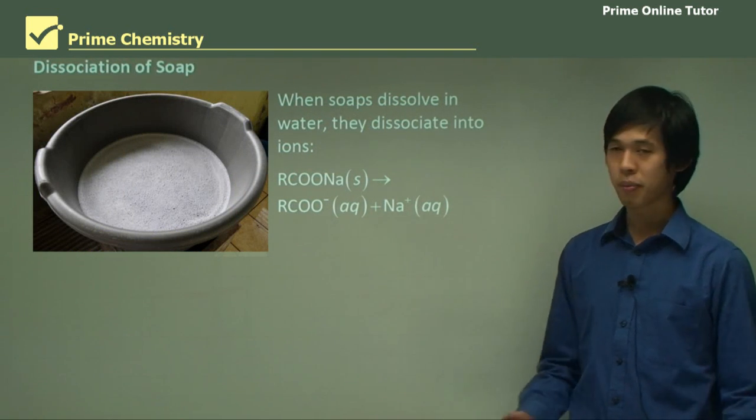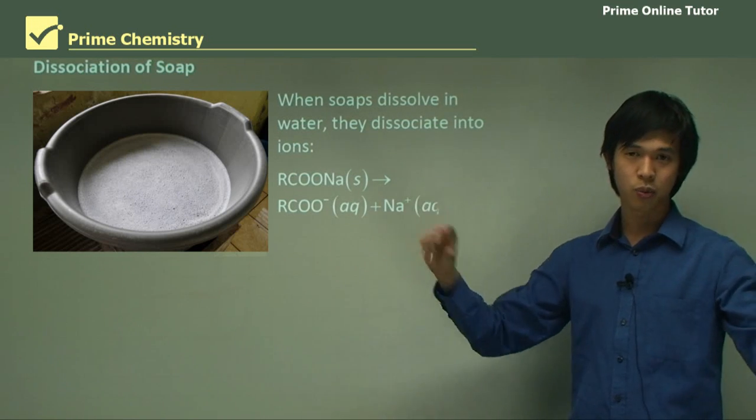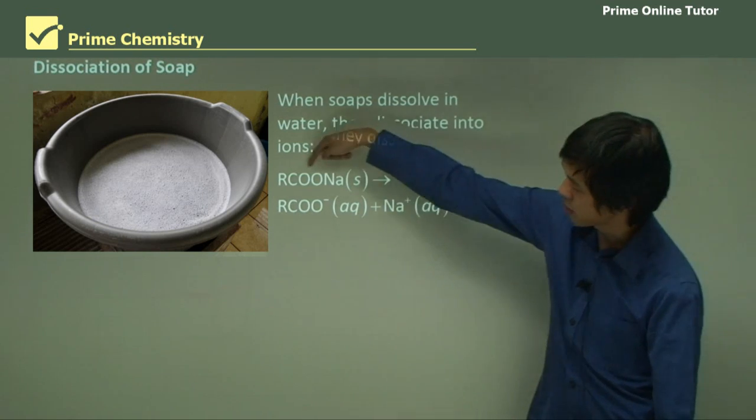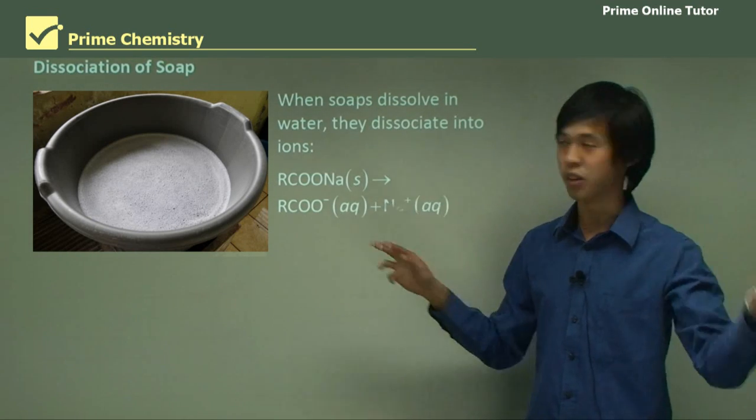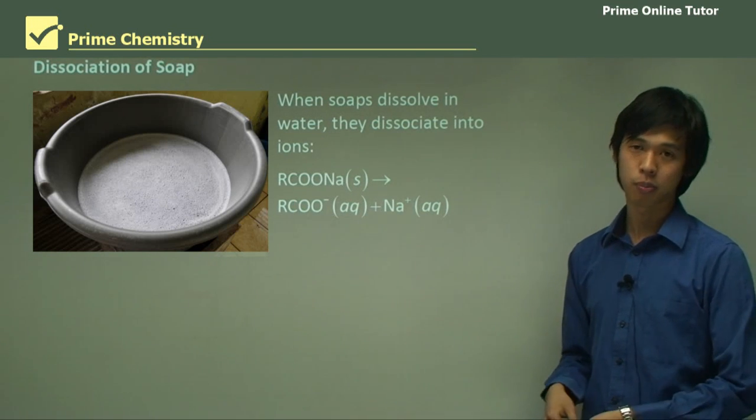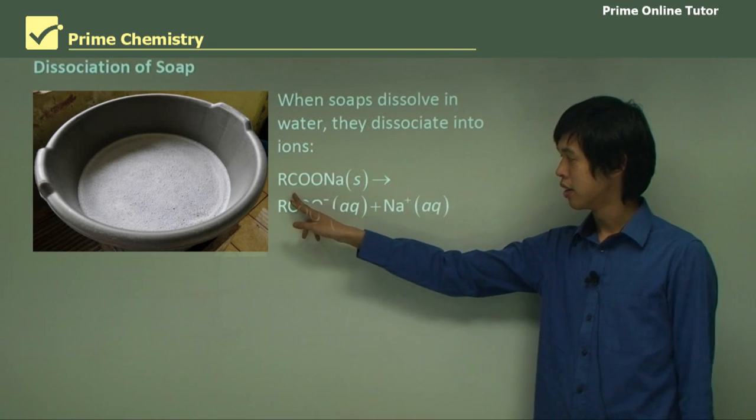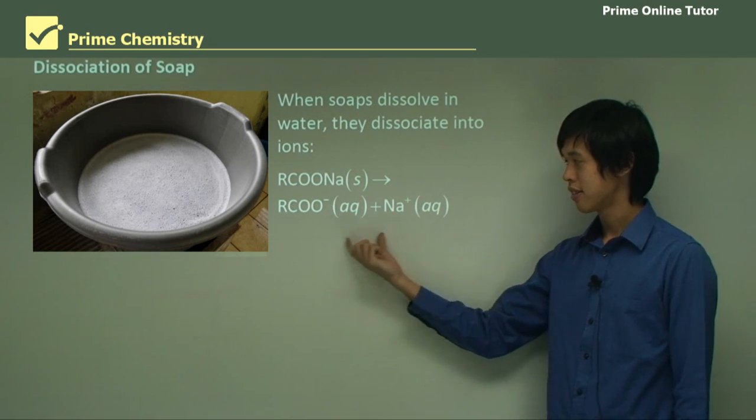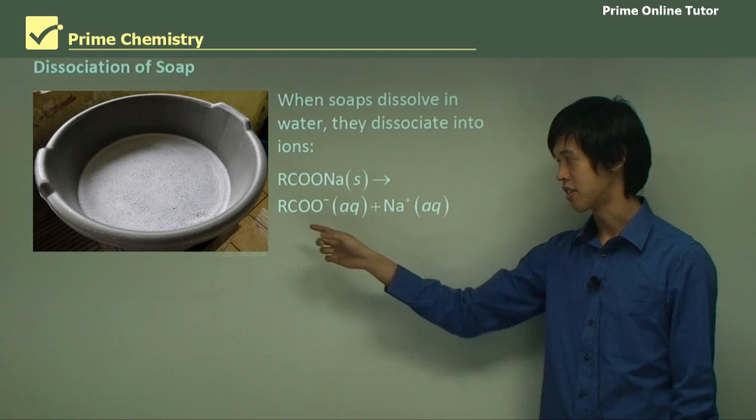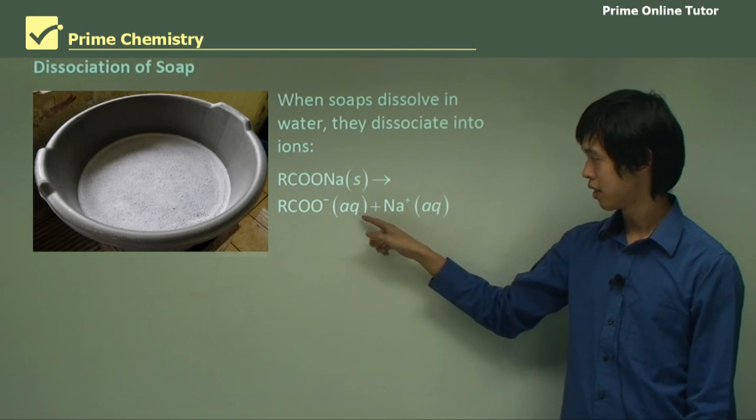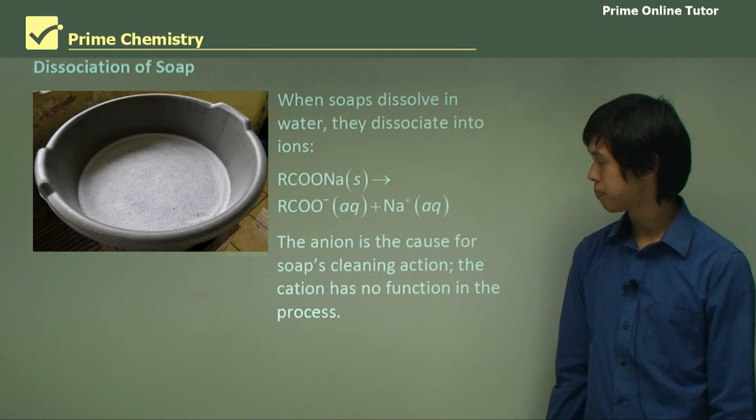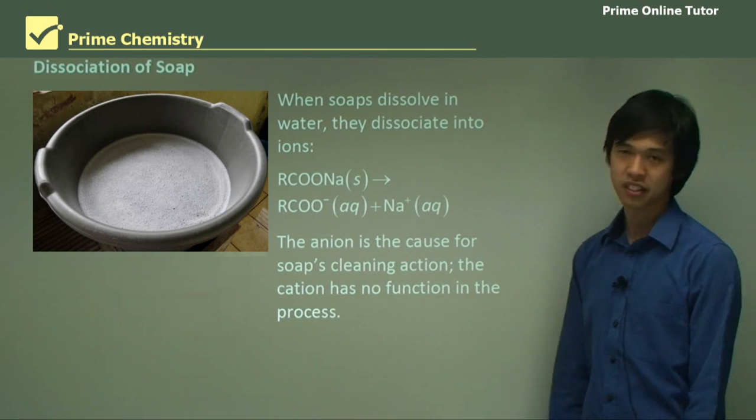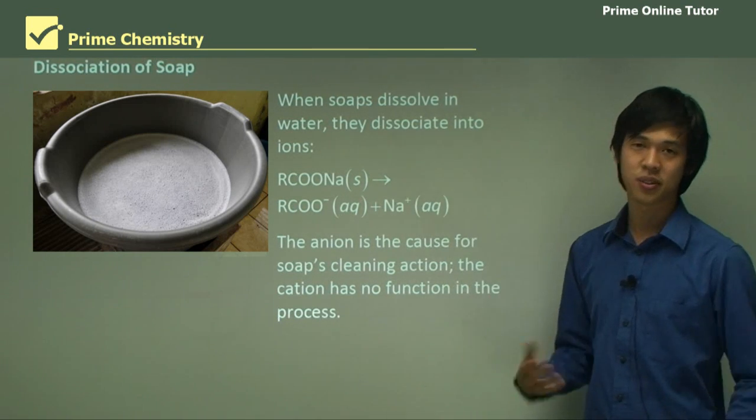The dissociation of soap. Remembering that soap was that long hydrocarbon chain with that Na head. When soaps dissolve in water, they dissociate into ions. Here's our soap with just a random R—it doesn't matter how long this R is, it could be 40 carbons long or 10 carbons long. The Na dissolves and goes away as Na+, and then you're left with this long hydrocarbon chain with a COO- negative end. It's negatively charged on this end.